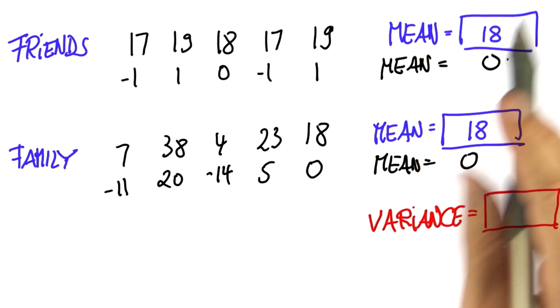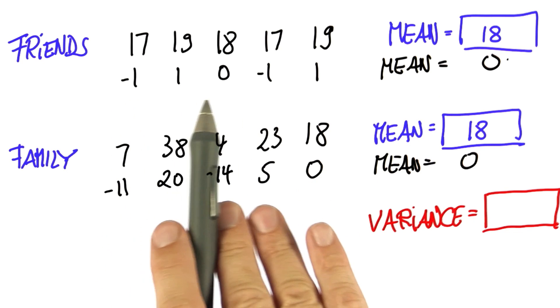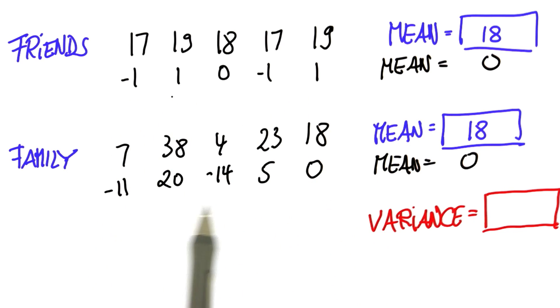But what's now really interesting is that these numbers are much closer to 0 than these numbers over here. So the spread over here is much larger.